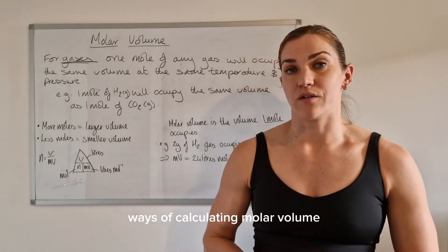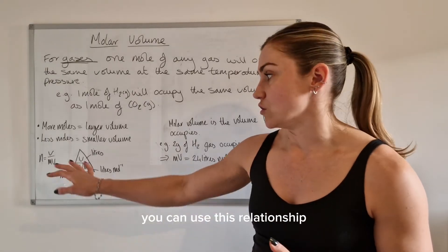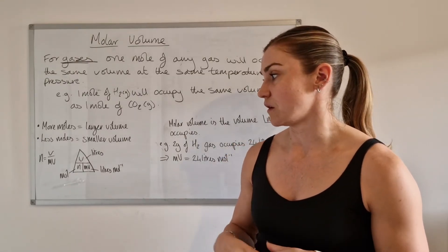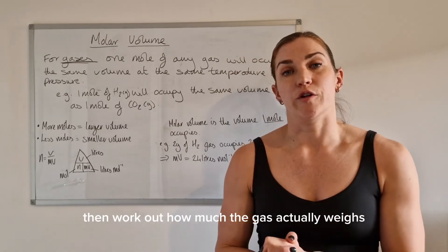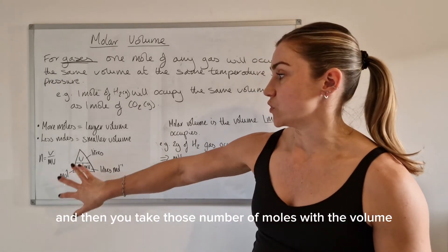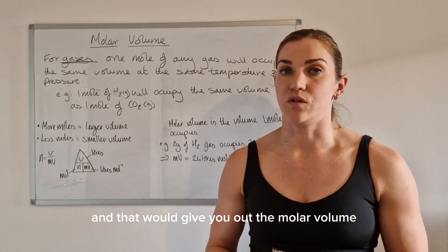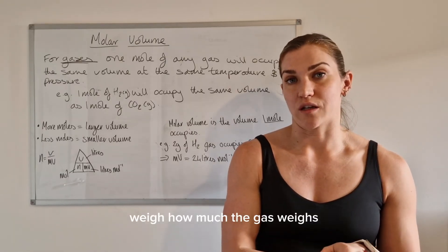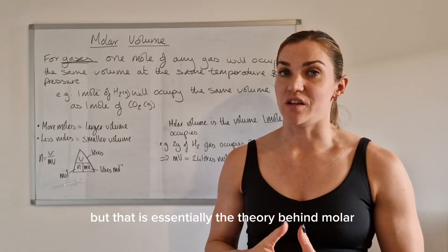In terms of experimental ways of calculating molar volume, you take a known number of moles of a gas with a known volume and use this relationship to work out the molar volume. For example, with a 100 cm³ flask of hydrogen gas, you would weigh it, work out how much the gas actually weighs, use the N = M/GFM relationship to work out the moles, then use those moles with the volume to work out the molar volume. So you'd have 0.1 litres divided by however many moles you had, giving you the molar volume.